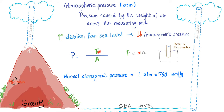What is pressure? Pressure is force divided by surface area. For atmospheric pressure, the force is the weight of all the air above the point you're measuring. At sea level, you calculate the weight of all the air above. On top of a mountain, there is less air above, so atmospheric pressure is greater at sea level than on a mountaintop. Normal atmospheric pressure at sea level equals 1 atm, which equals 760 mmHg.